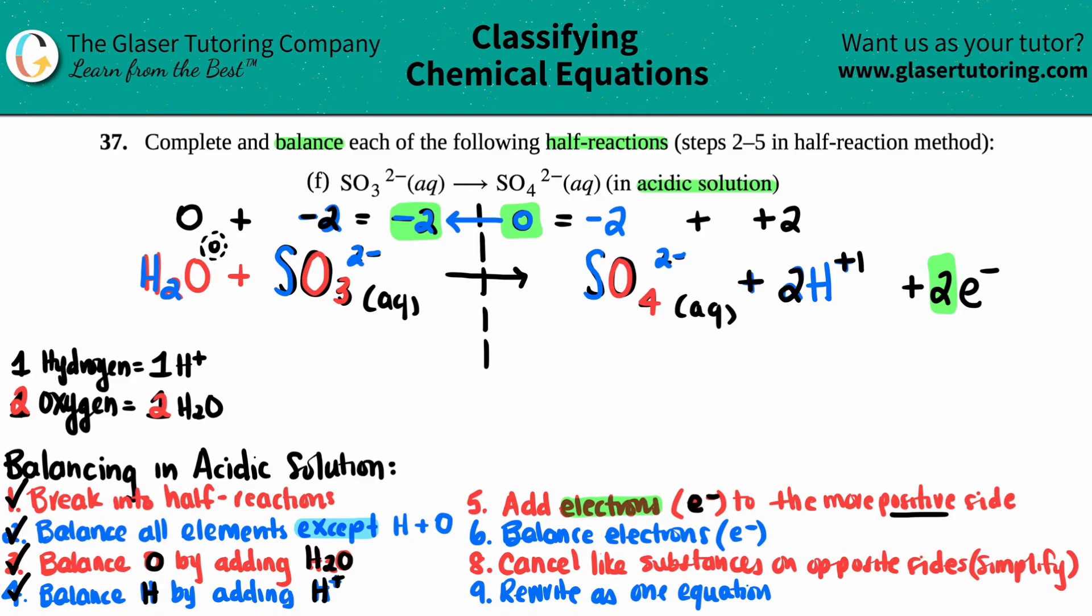So the full thing without all these pretty colors would just be water plus SO3 two minus. And if you want to put aqueous, that's fine. And that yields sulfate, SO4 two minus aqueous, plus two H plus, and then plus those two electrons. And that's it.